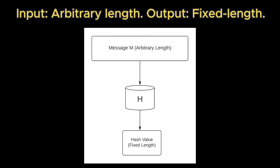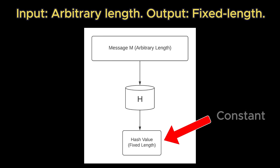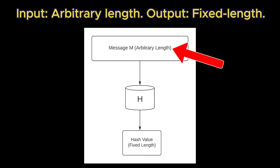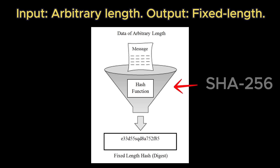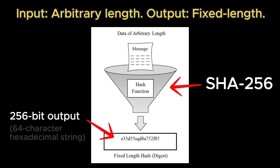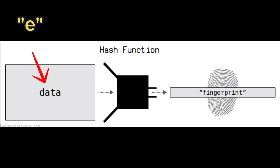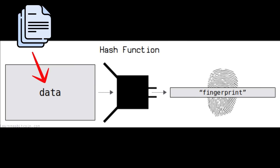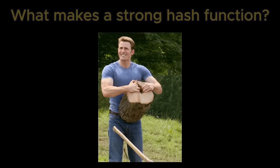One key feature of hashing is that the output length is constant, no matter the size of the input. For example, SHA-256 always produces a 256-bit, 64-character hexadecimal hash, whether you're hashing a single letter, a full paragraph, or an entire gigabyte-sized file.